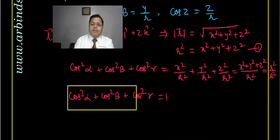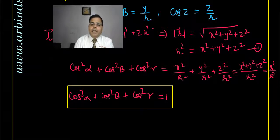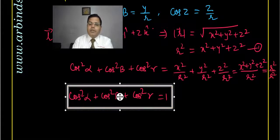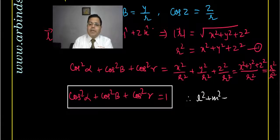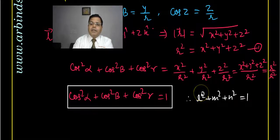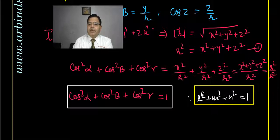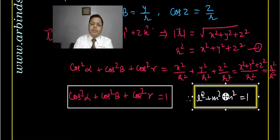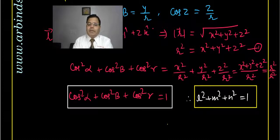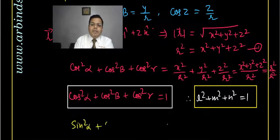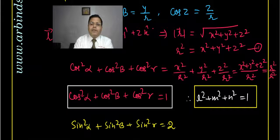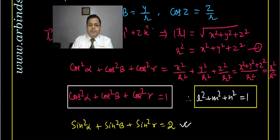So remember: cos²α + cos²β + cos²γ equals 1, or equivalently L² + M² + N² equals 1. If you convert to sines, then sin²α + sin²β + sin²γ equals 2. You may remember either form. These are important identities relating direction cosines.